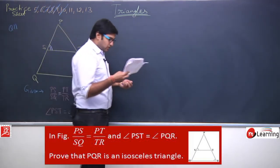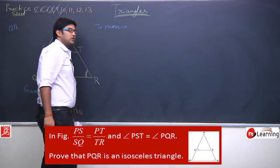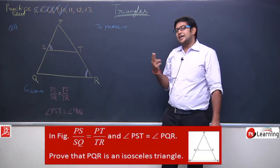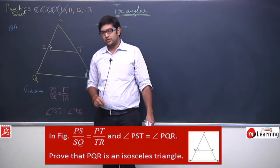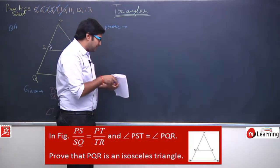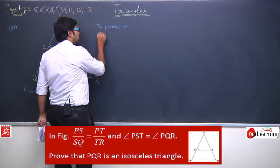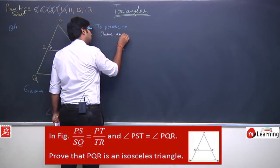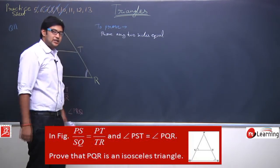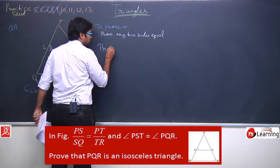Given: PS/SQ = PT/TR, and angle PST = angle PRQ. To prove: triangle PQR is an isosceles triangle, meaning we need to prove any two sides are equal.